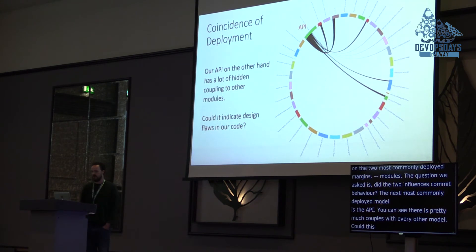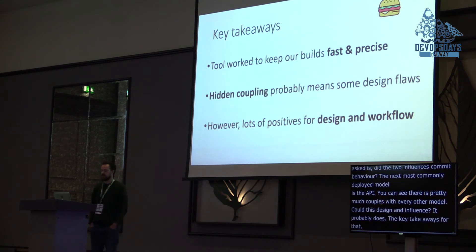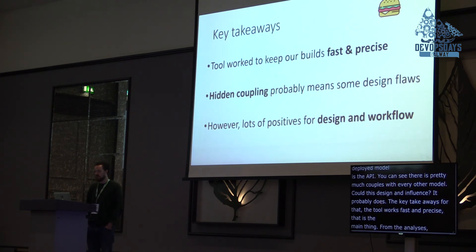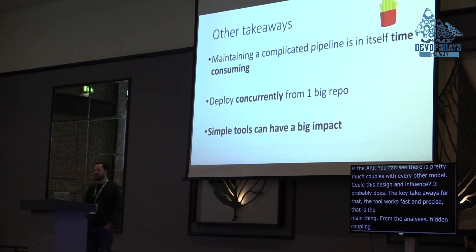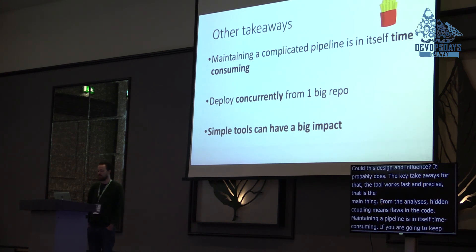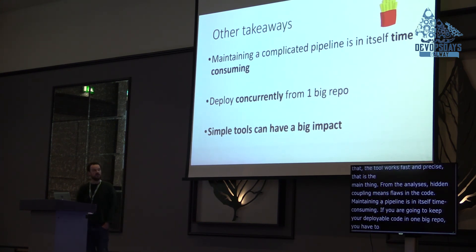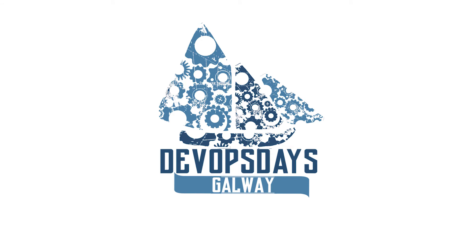The key takeaways for me are that the tool works to keep our build fast and precise — that's the main thing. From the analysis, hidden coupling probably means there are some design flaws in our code, but on the other hand there are lots of positives for design and workflow. At a higher level: maintaining a complicated pipeline isn't itself time consuming. If you're going to keep all your deployable code in one big repo, you really have to deploy everything concurrently. And the big takeaway is that simple tools can have a big impact. You can get the code there — it's written in Gradle and Java, but it could be easily translated to your favourite language and build tool. Thanks for listening.